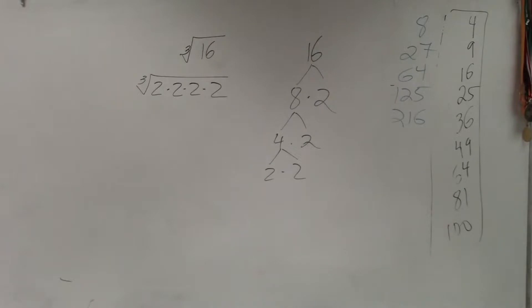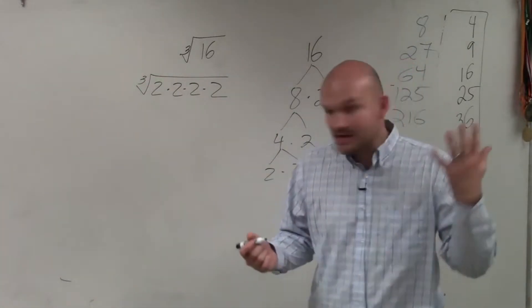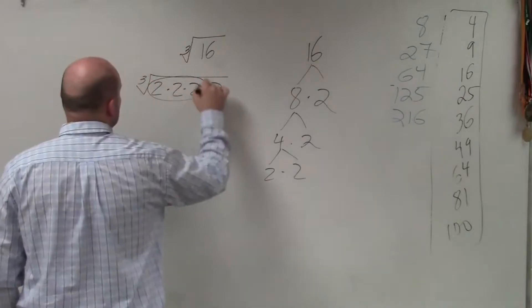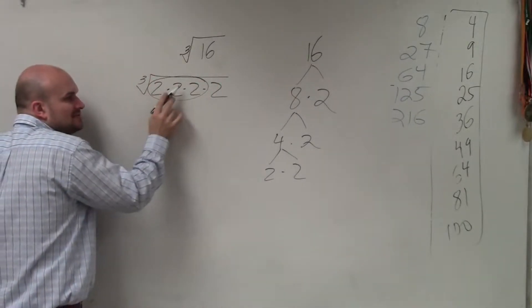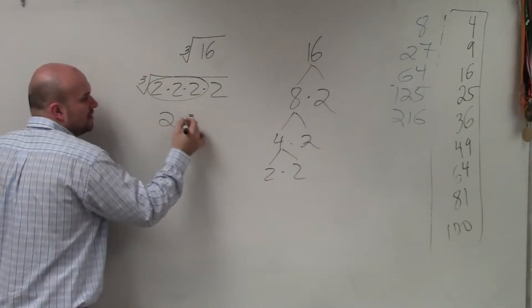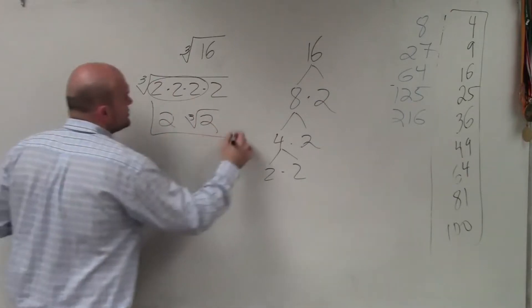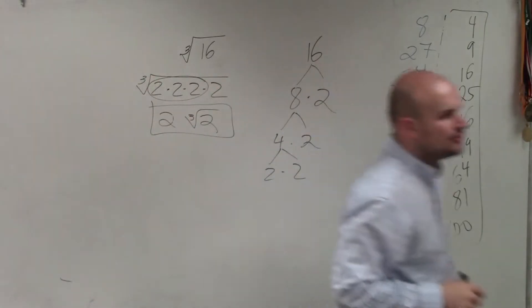So if you take the factor tree and then write your number as a prime factorization, now to take the cube root, you need to group how many of the 2's? Three. So the cube root of 2 times 2 times 2 is just 2, and then you still have a 2 left under your radical.